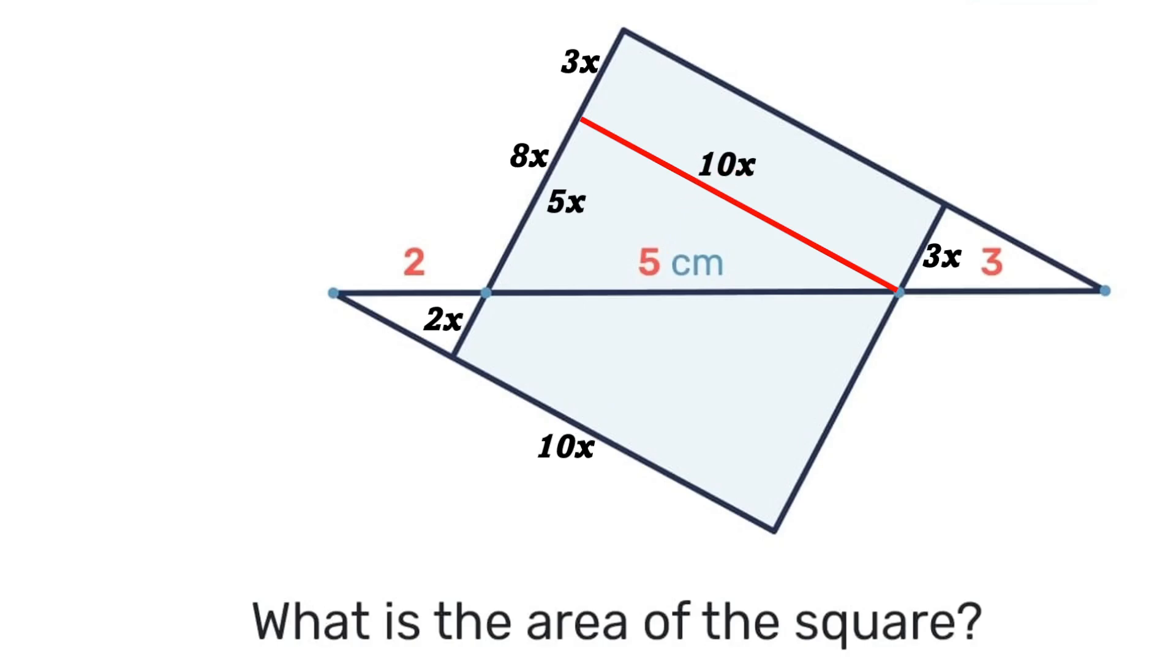So we have a right angle triangle and we can use Pythagoras's theorem, where we'll have that the square of 10x plus the square of 5x will be equal to the square of 5. So that will give us 100x² plus 25x² equals 25. Simplifying, we'll have 125x² equals 25.